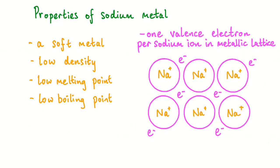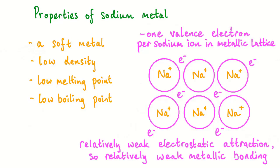Many of these physical properties can be attributed to the fact that sodium is a relatively large atom. In the metallic lattice of sodium, you won't find that many sodium atoms per unit of volume. This gives sodium a low density. Also in the metallic lattice, we find that there is only one valence electron per sodium ion. This gives rise to relatively weak electrostatic attraction between these delocalized electrons and the sodium ions in the lattice. Therefore, the metallic bonding is correspondingly weak also.